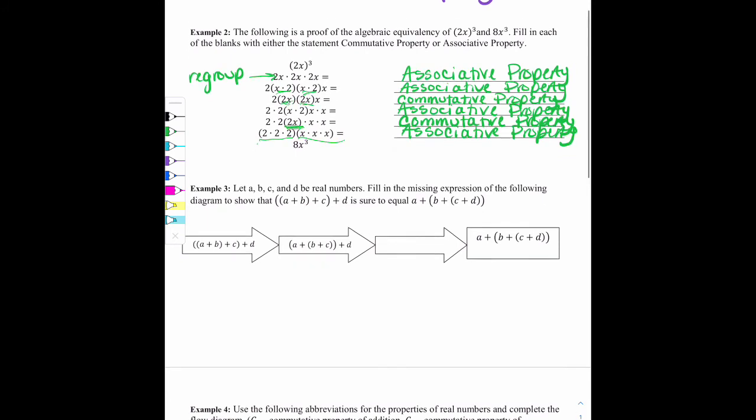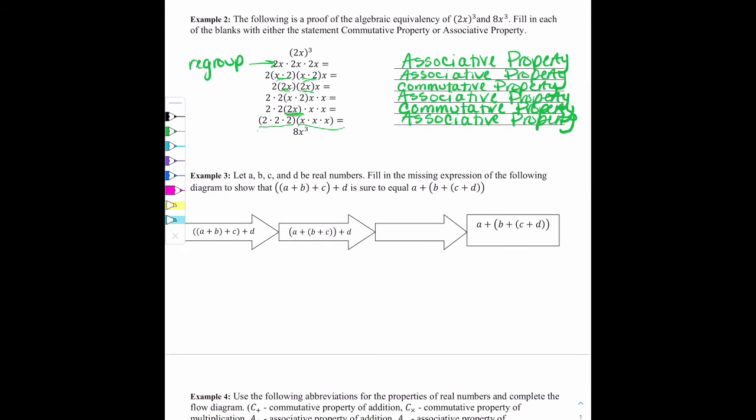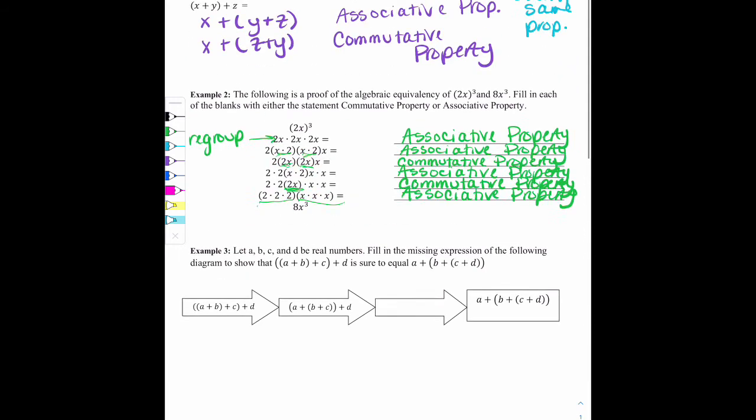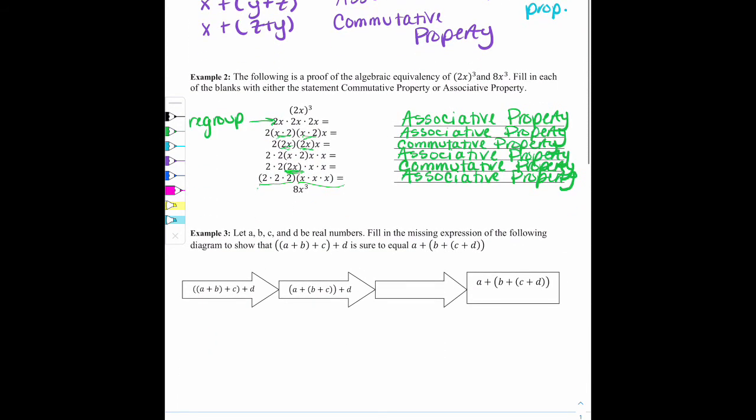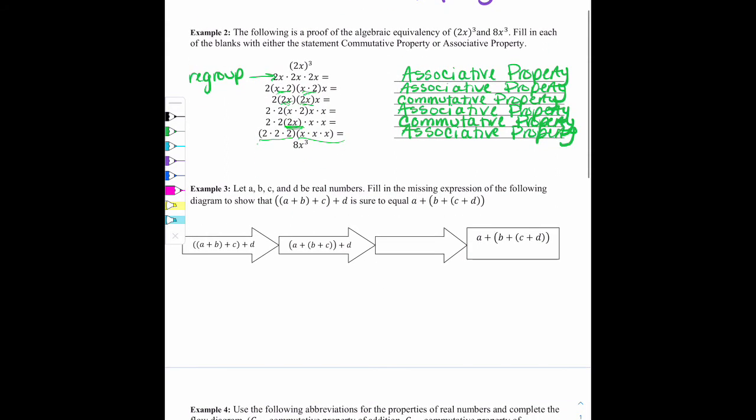All right, let's look at example 3. It says let a, b, c, and d be real numbers. Fill in the missing expression of the following diagram to show that (a+b)+(c+d) is equal to (a+b+c+d). So we're trying to show that those two things are happening. And it's already started for us. So we're doing all different forms of proof. First, we've started beginning to end and did it completely on our own, making the moves in the symbols and describing the properties. In example 2, all the mathematical moves were made for us, and we're just describing what happened in the proof with the properties. And now this is an example of the missing piece.